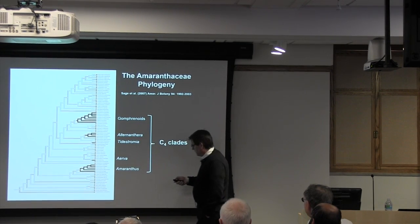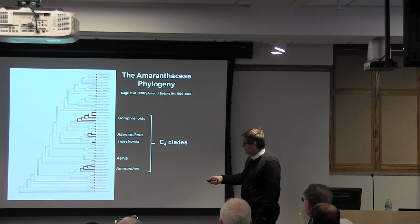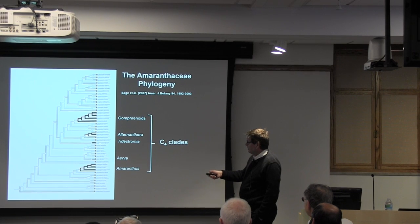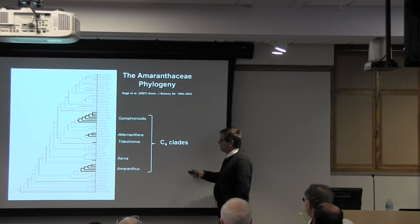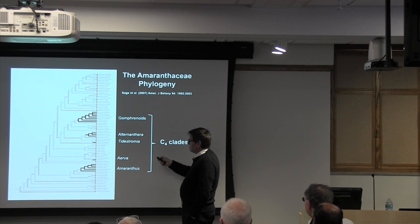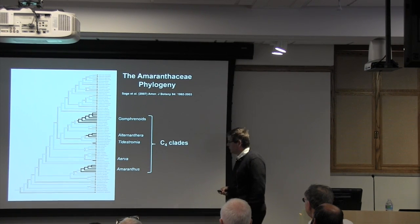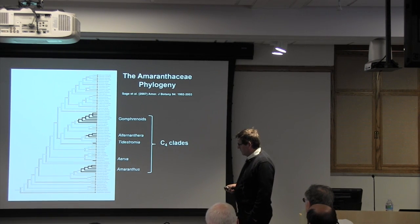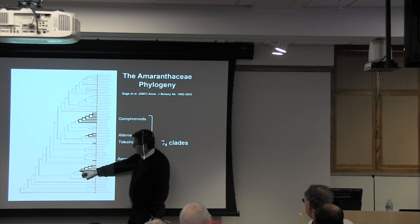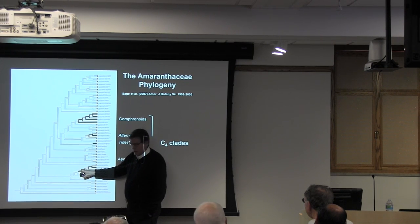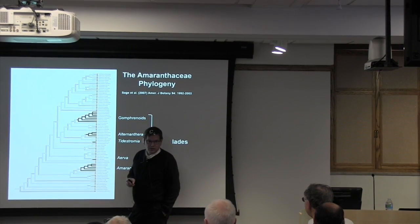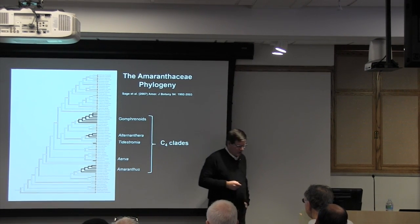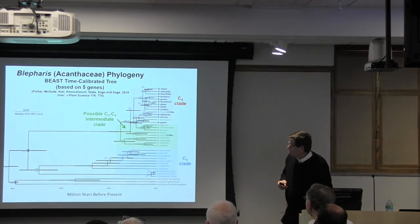Here's the Amaranthaceae, and by doing this with a more detailed phylogeny, we mapped the isotopes on and identified five distinct origins of C4: in Amaranthus, in Aerva, a small one in Tidestromia, a smallish one in Alternanthera, and then a relatively large one in the gomphrenioids, a five-genera group. Now we could go to these branch points and ask whether we have intermediate species and put that intermediacy in a phylogenetic context.